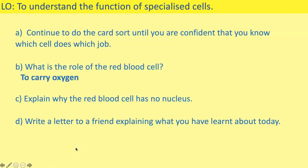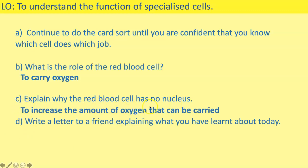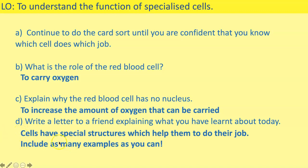The role of a red blood cell is to carry oxygen around the body. The red blood cell has no nucleus to increase the amount of oxygen that can be carried — there's more space for oxygen. For the letter, you should have included as many examples as possible. You have five examples — if you included all five cells with their structure and function, that's great. If not, edit your letter to make sure you've included all the examples covered in today's session.